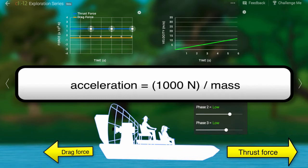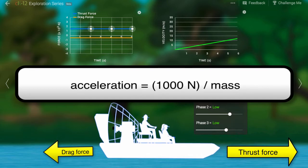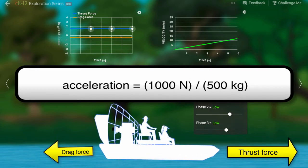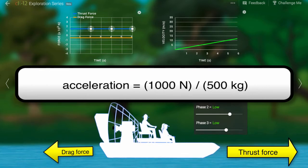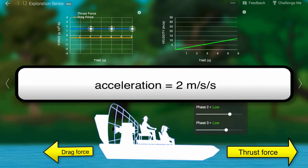According to Newton's second law, the acceleration of the boat is the net force divided by the mass. Here, the mass is 500 kilograms. So if the net force is 1000 newtons and the mass is 500 kilograms, the acceleration will be 2 meters per second squared.